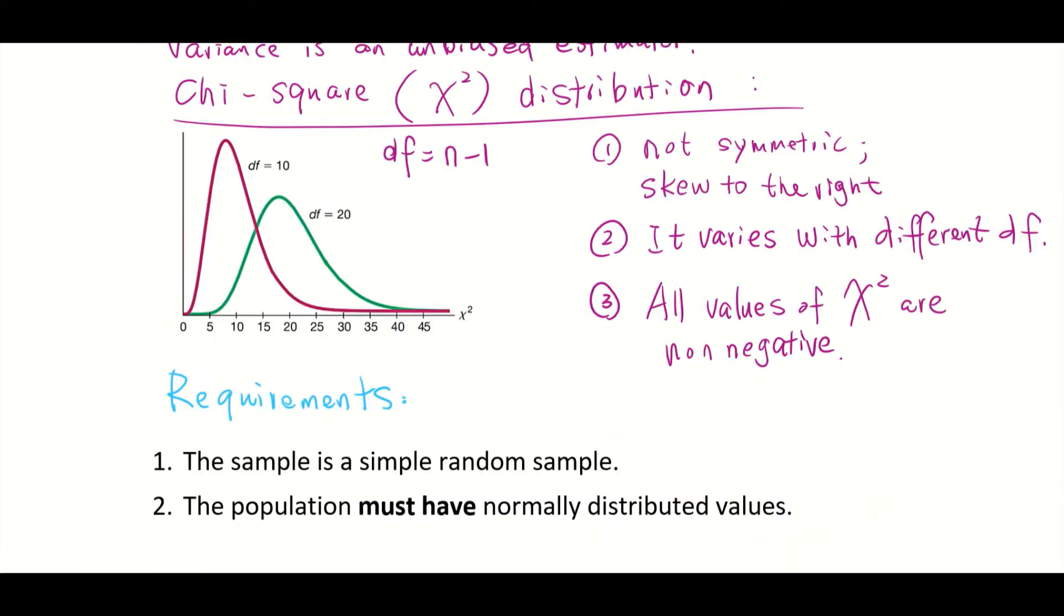To construct a confidence interval for population standard deviation or variance, you have to satisfy the following two requirements. First is the sample must be a simple random sample. The second requirement is the population must have normally distributed values. So this second requirement is kind of strict and it must be from normally distributed values.